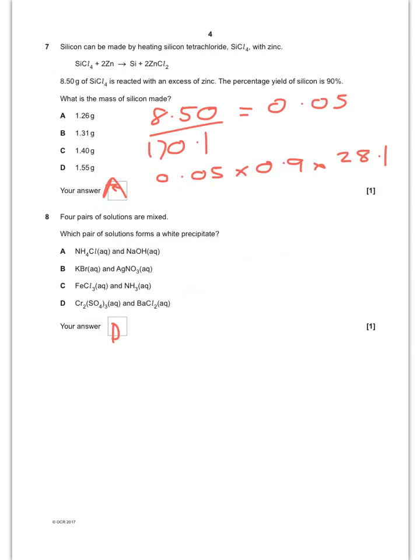Okay, moving on to question 7. You've got 8.5 grams of silicon tetrachloride reacting with excess zinc, and you've got a percentage yield of 90%. How much silicon do you make? Well, obviously first of all you find your number of moles of silicon tetrachloride, which is here. That gives you 0.05 moles. You only get 90% yield, so you times that by 0.9, and then finally times it by the relative atomic mass of silicon there, and you'll find the answer to be A, 1.26 grams.